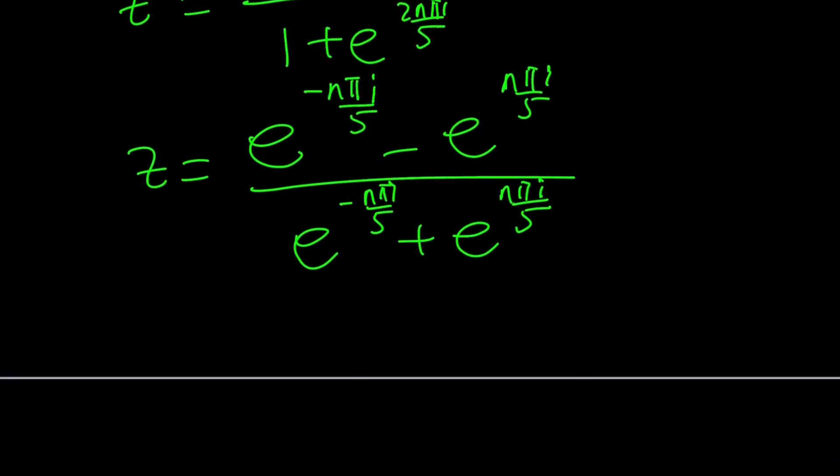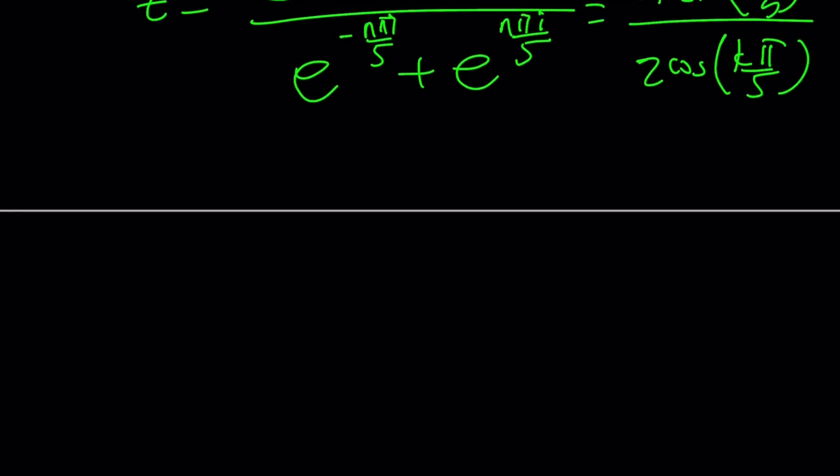And this is going to give you -2i*sin(nπ/5), which is going to bring us to the √(5 - 2√5) value, and this is going to be 2cos(nπ/5). And if you simplify this a little bit more, so z is going to turn out to be -i*tan(nπ/5).